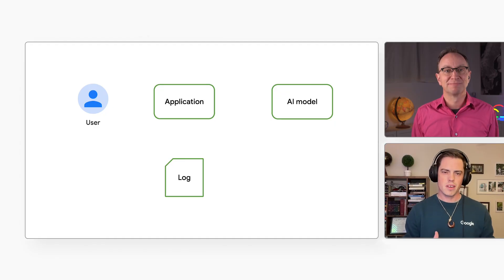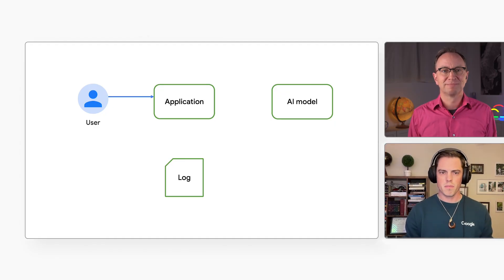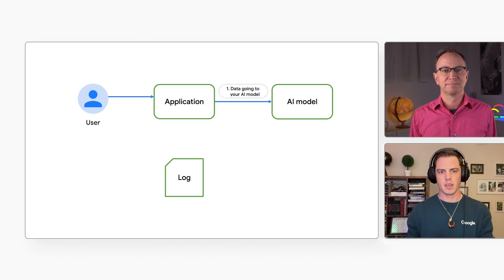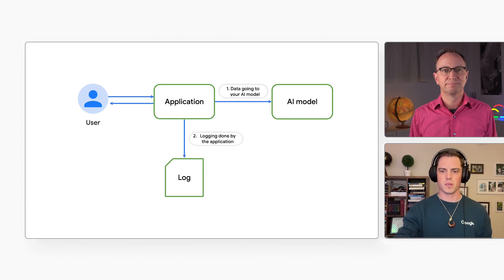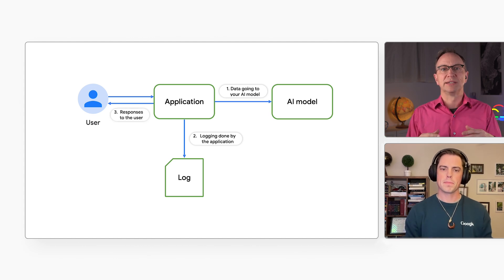So Aaron, you just described how Google Cloud handles this kind of data. How would an organization that builds AI applications on Google Cloud safeguard the data in those apps? There are three main data flows in AI applications where you may want to remove sensitive information. One is data going to your model. Two is the logging done by the application. And three is the response to the user. So there are three data flows and there may be sensitive personal data in any of them.